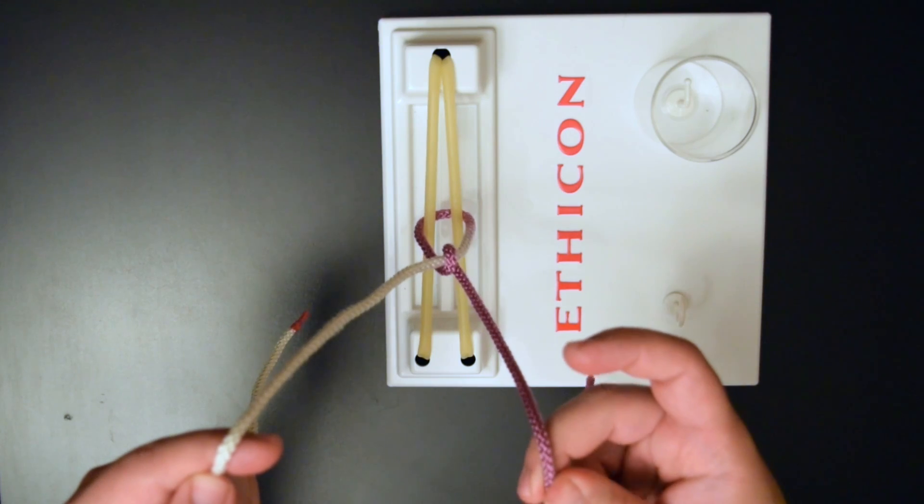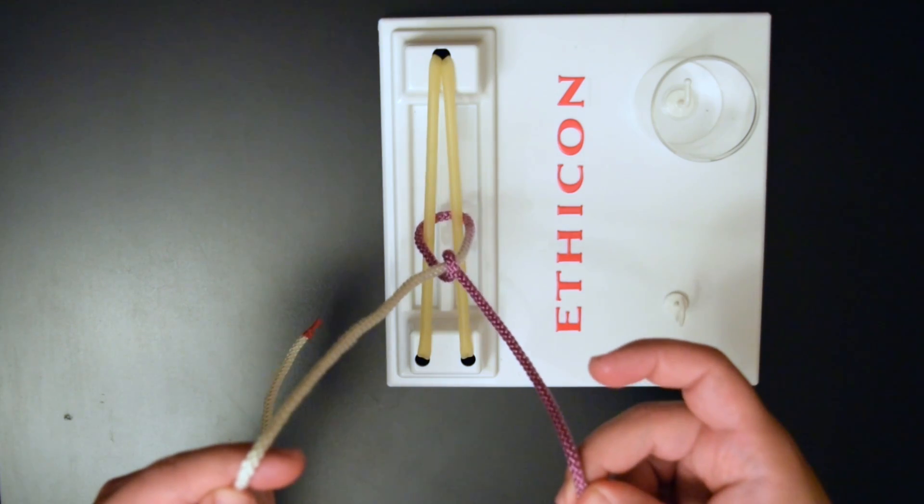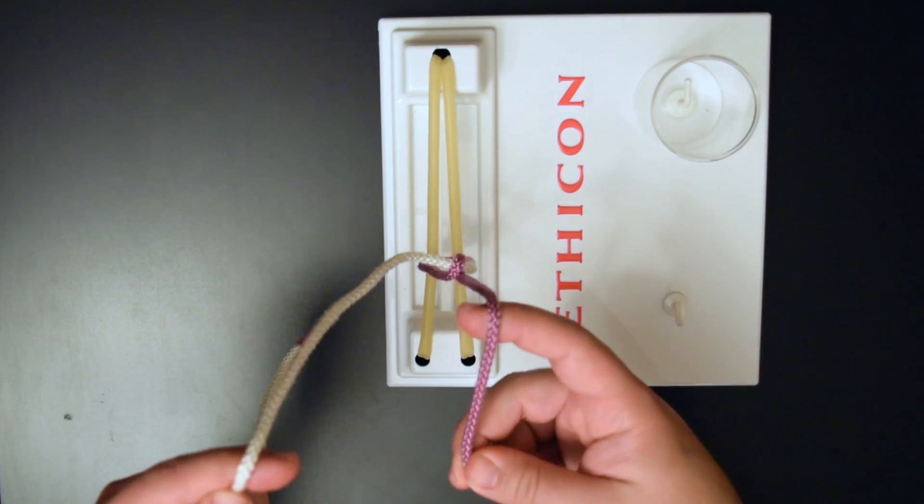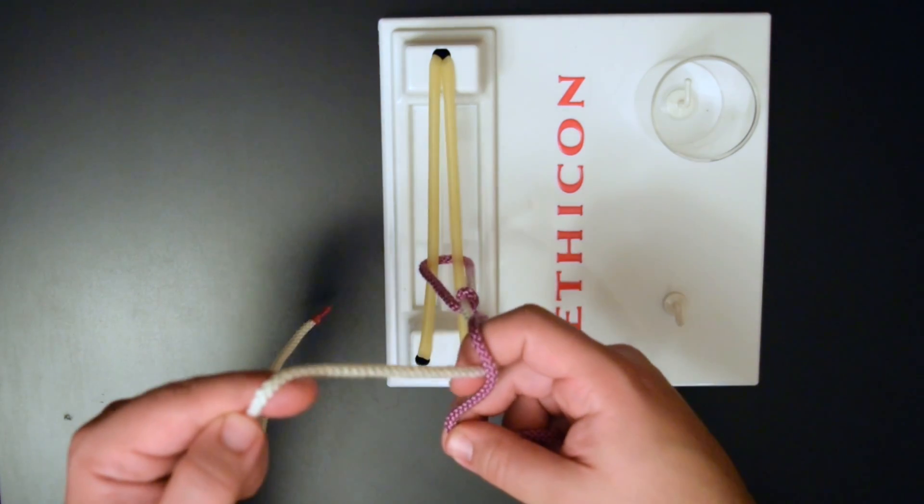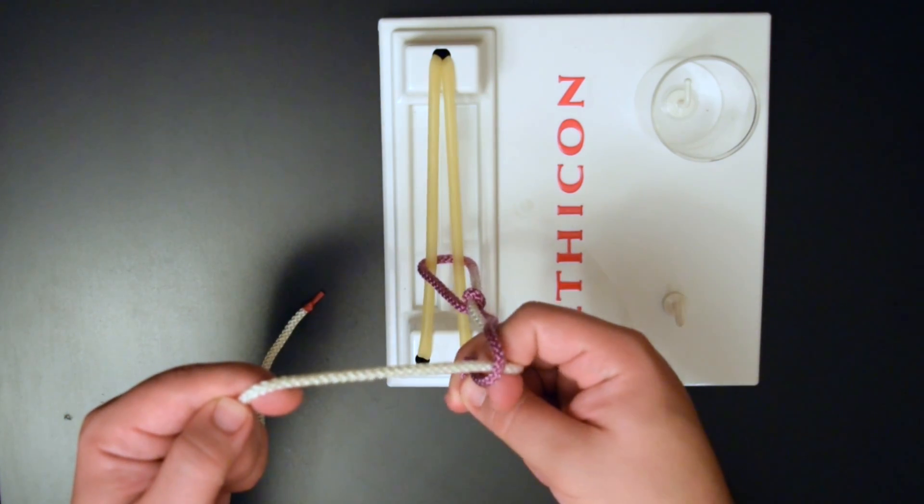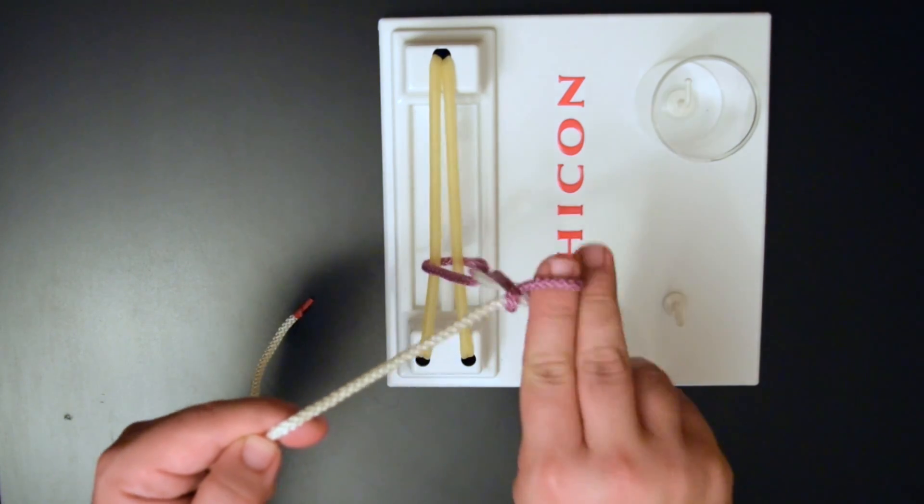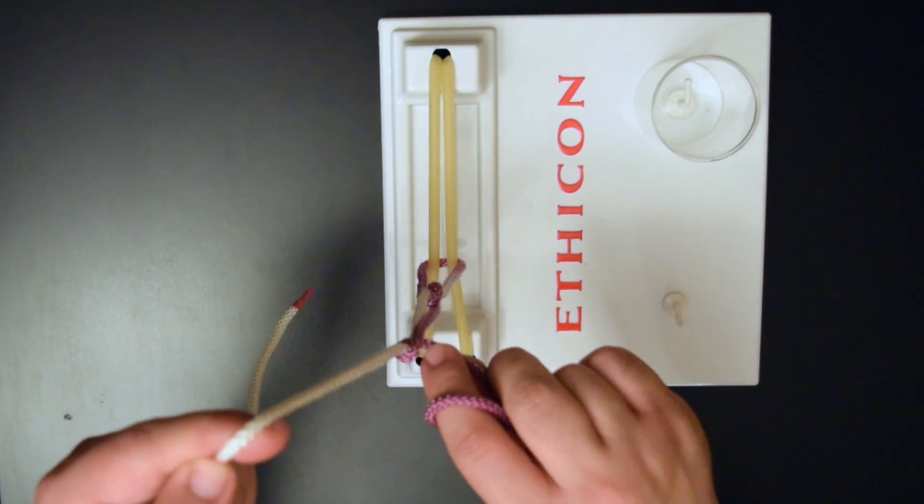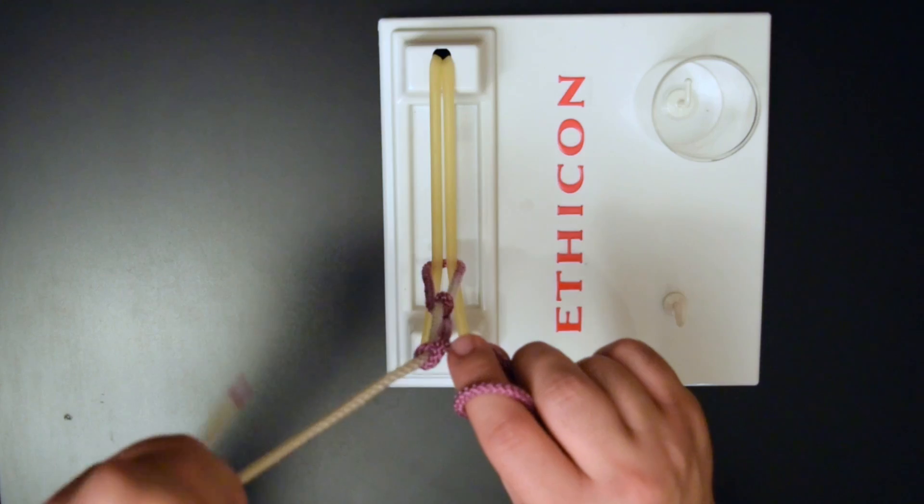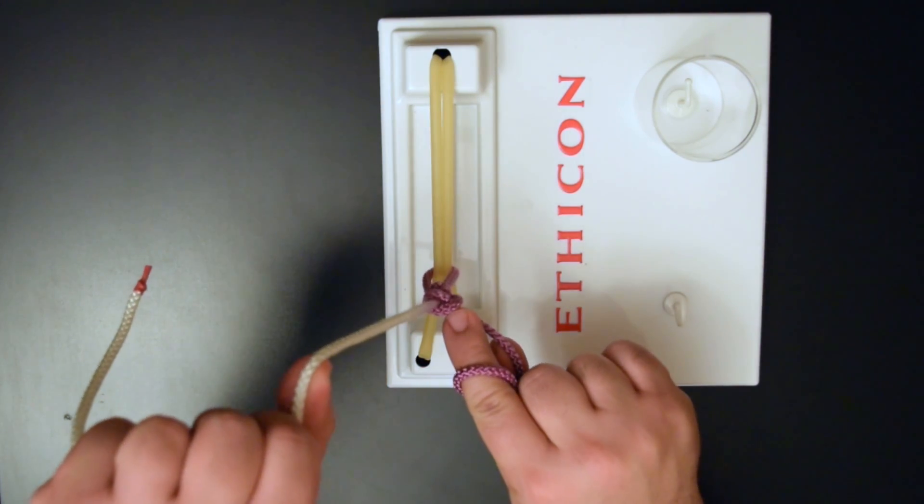Pinch the suture between your index finger, your middle finger and your thumb. Go underneath the suture. Cross your strands. Flex your index finger. Kick it out. Come across. And then again keep pulling up on the left with your left hand. And you're going to push this down.